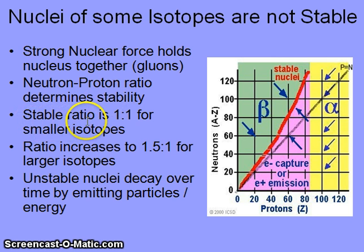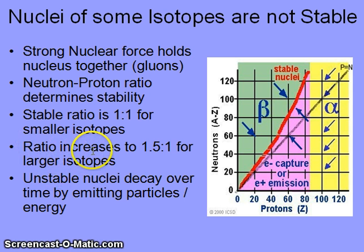The stable ratio is 1 to 1 for protons to neutrons in smaller atoms. For example, carbon-12 is a stable isotope of carbon because it has a 1 to 1 ratio — 6 protons and 6 neutrons — giving a total mass of 12. As we move into larger and larger atoms, we start to see the ratio increasing to 1.5 to 1. Here, a larger number of neutrons is needed to help mitigate the repulsive forces between all of the protons present in the nucleus.